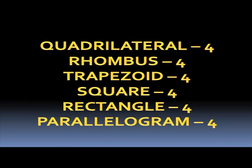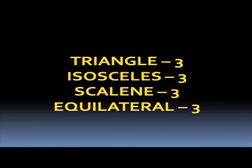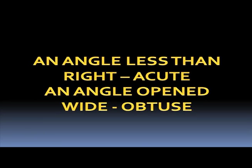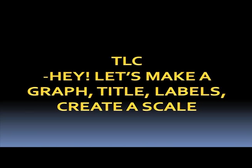Parallelogram: 4. Triangle: 3. Isosceles: 3. Scalene: 3. Equilateral: 3. 90 degrees: Right. 180 degrees: Straight. An angle less than right: Acute. An angle open wide: Obtuse. TLC — hey, let's make a graph: Titles, Labels, Create a scale.